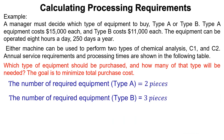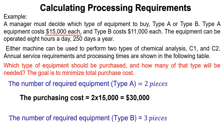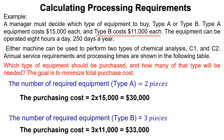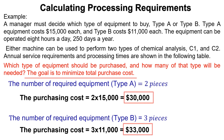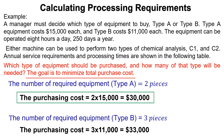After calculating the required equipment of each type, compute the corresponding purchasing cost by multiplying the number of pieces by the cost of one piece of equipment. For Type A, the purchasing cost equals 2 times $15,000, which equals $30,000. For Type B, the purchasing cost equals 3 times $11,000, which equals $33,000. As the goal is to minimize the total purchasing cost, two pieces of Type A would have sufficient capacity to handle the load at a lower cost than three pieces of Type B.